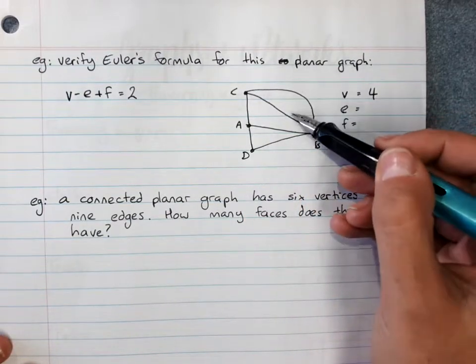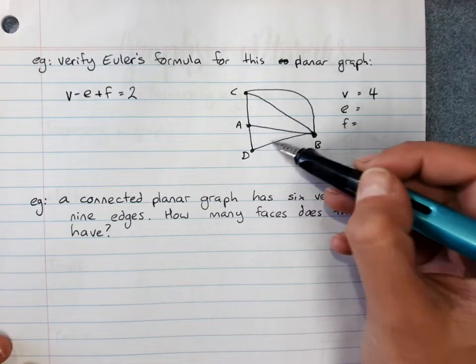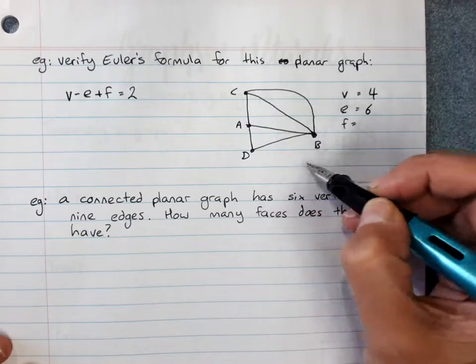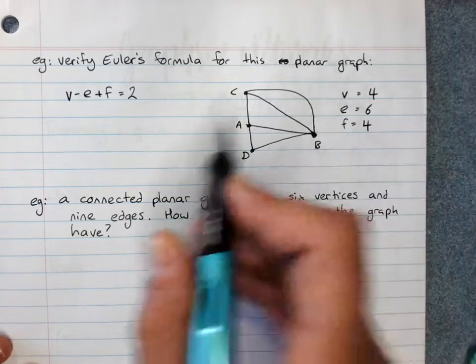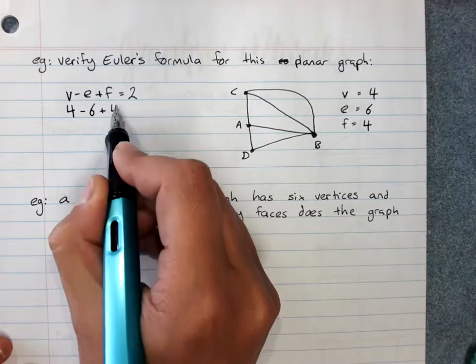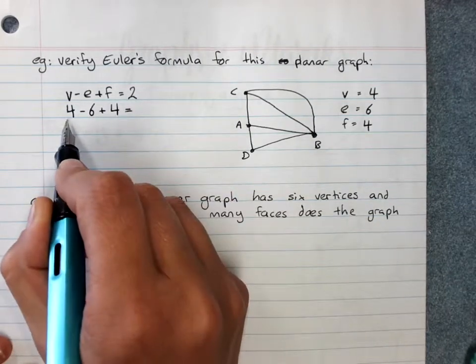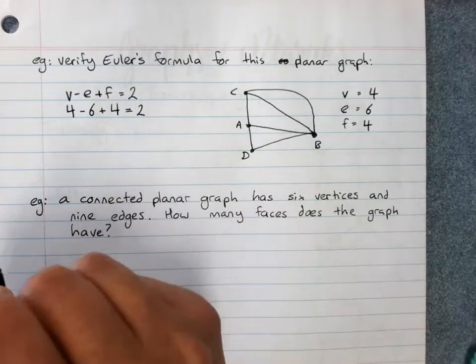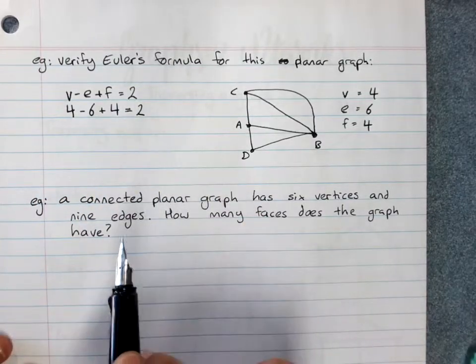Edges: 1, 2, 3, 4, 5, 6. Faces: 1, 2, 3 and 4, the outside face. Double check: 4 minus 6 plus 4 equals 2. It works, we've just verified Euler's formula.